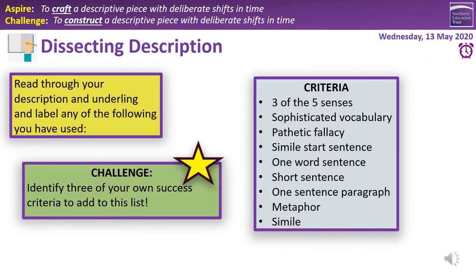Well done on your hard work on that piece of description. Hopefully it's something you're proud of and willing to show people at home or send to your teachers. Now read through your description carefully and underline, label, or highlight any of the following things from the blue box: have you used three of the five senses — not just sight but smell and sound? Have you used sophisticated vocabulary, pathetic fallacy, a simile start for a sentence? Have you used a one-word sentence, a short sentence, a one-sentence paragraph, or a metaphor? Spend about seven minutes on this, then press play when you're finished.